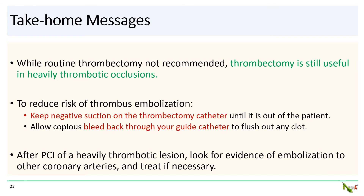Take-home messages: First, while routine aspiration thrombectomy is no longer recommended, it is still quite useful and necessary in some settings, such as heavily thrombotic occlusions, where balloon angioplasty and even stenting just aren't sufficient. To reduce the risk of thrombus embolization, keep negative suction on the thrombectomy catheter until it is out of the patient, and allow copious bleed back through your guide catheter to flush out any clot that has separated or detached. But unfortunately, sometimes even when you do this, you can still get thrombus embolization. After PCI of a heavily thrombotic lesion, look for evidence of a wayward clot that has embolized to other coronary arteries, and treat if necessary.